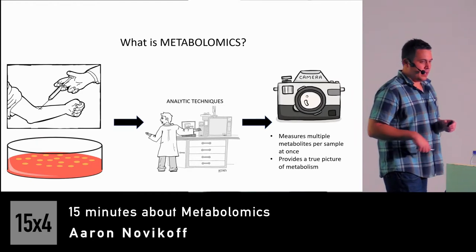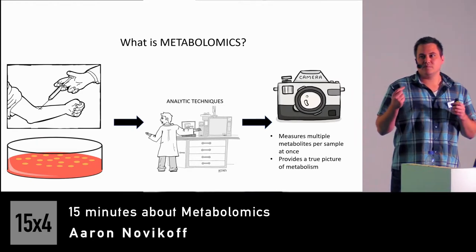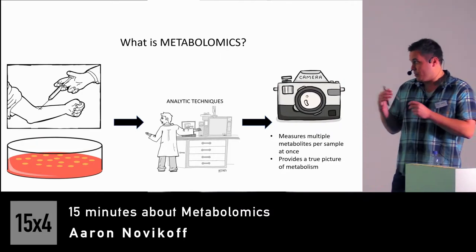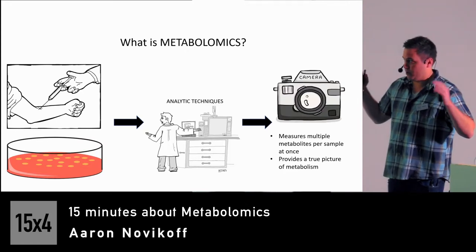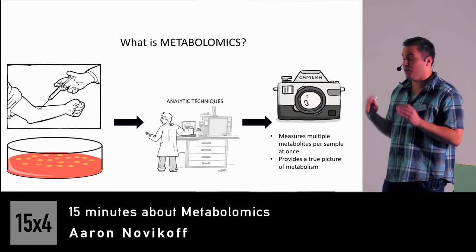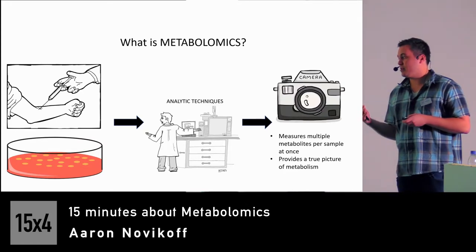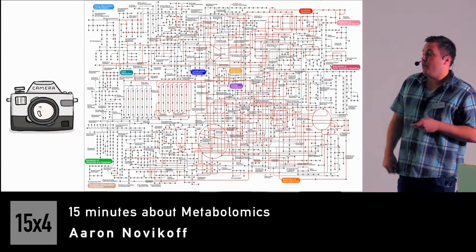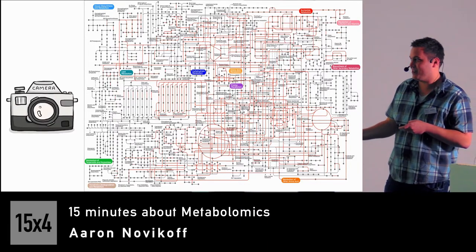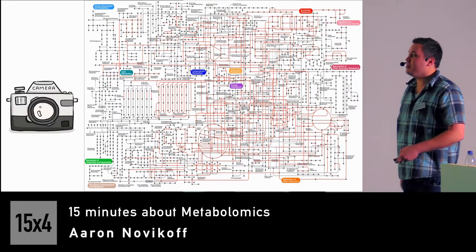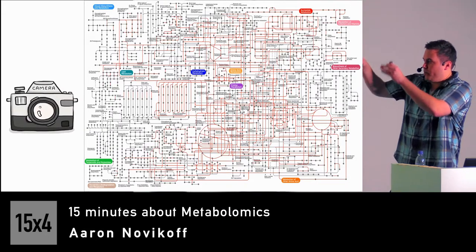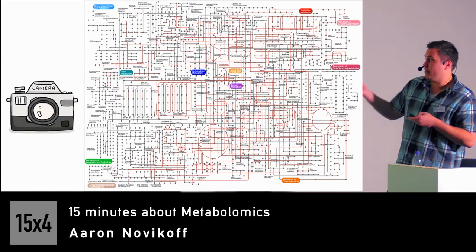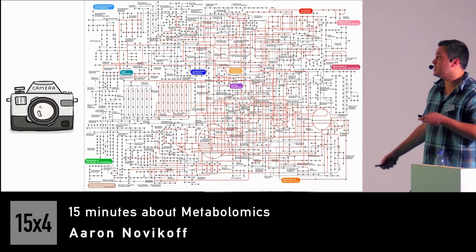What separates metabolomics from other analytic techniques is that traditional experiments look at maybe one, two, or three metabolites. With metabolomics we're able to measure multiple metabolites at once, providing a true picture of what metabolism is. Think of this camera as representing metabolomics — we're able to take pictures of the metabolism and understand what's really going on at certain time points through concentration changes and which metabolites are present.